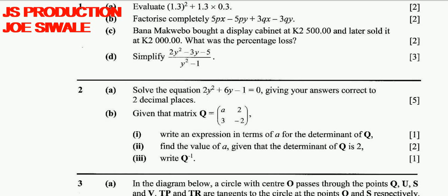Question B reads: given that matrix Q equals [a, 2; 3, -2]. Part 1: write an expression in terms of a for the determinant of Q — 1 mark. Part 2: find the value of a given that the determinant of Q is 2 — 2 marks. Part 3: write the inverse of Q — 1 mark.